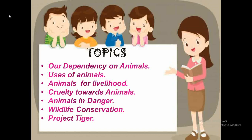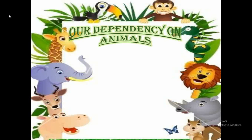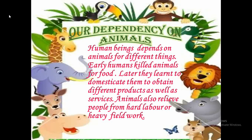Let's begin with the very first topic, that is our dependency on animals. Human beings depend on animals for different things and different purposes. Earlier, humans killed animals to obtain food. But later on, they learned to domesticate animals to obtain food, different products, as well as services. Animals also relieve people from hard labor or heavy field work.